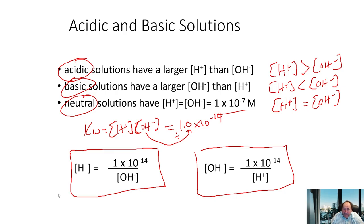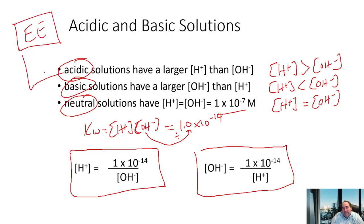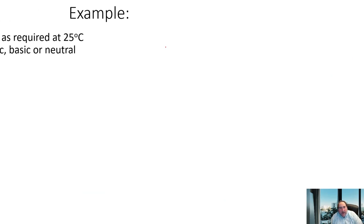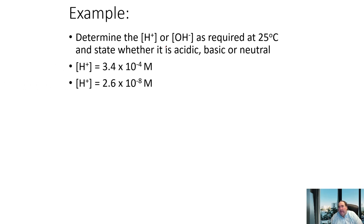Important calculator reminder: this chapter requires using the exponent button correctly. Enter numbers in scientific notation using the EE or EXP button — NOT a separate multiplication by 10. Failure to do this will cause errors. Make sure you also use the negative button (not subtract) for negative exponents.